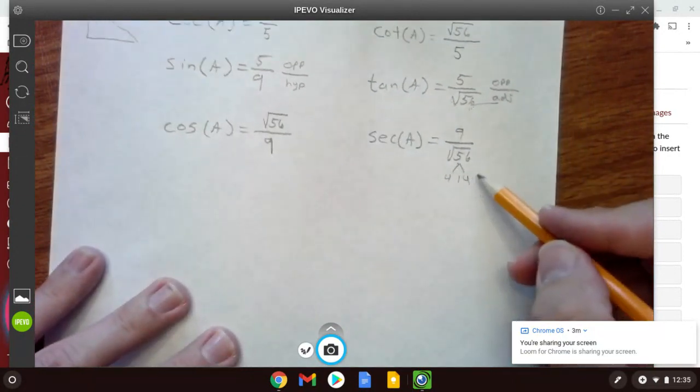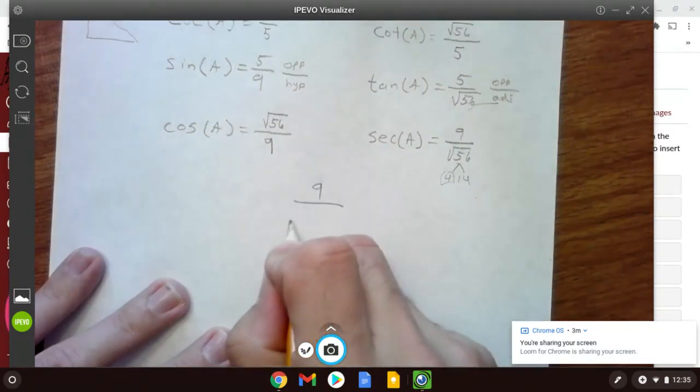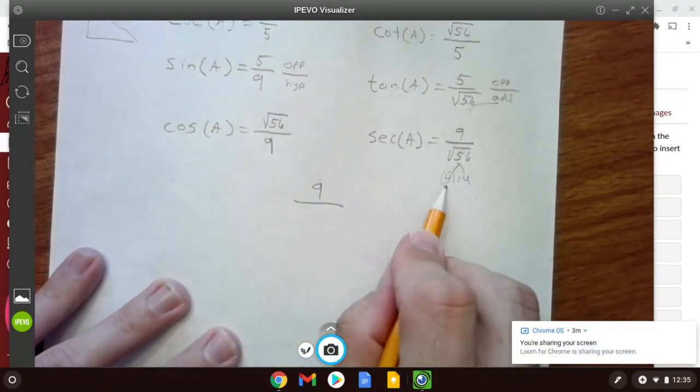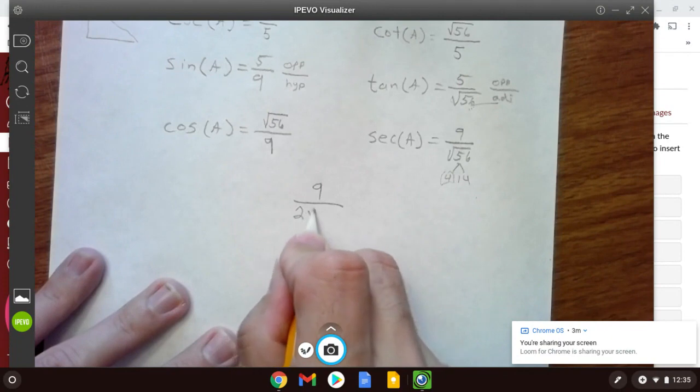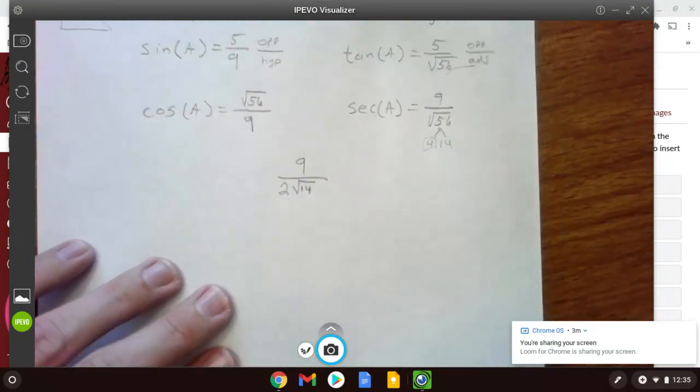All right, so I could think of, I pull out my 4 here, and that's going to be rewritten as 9 over, see the square root of 4 is 2, and square root of 14. And then, if we wanted to rationalize the denominator here, we'd multiply by root 14.